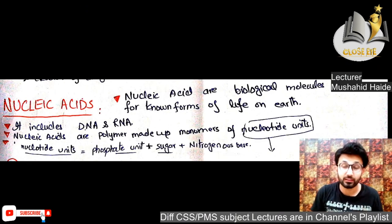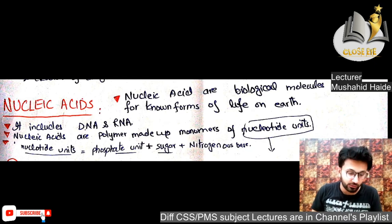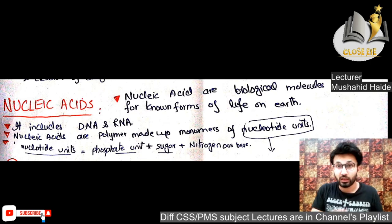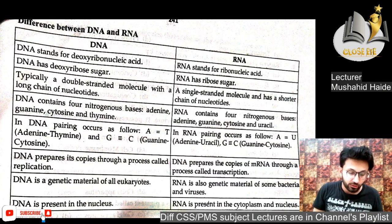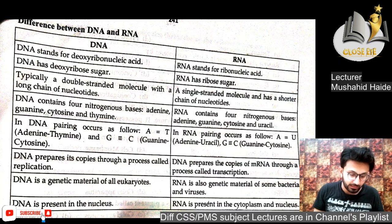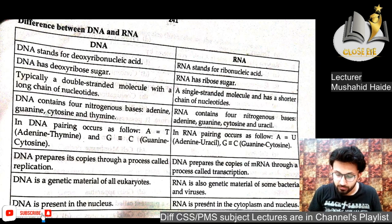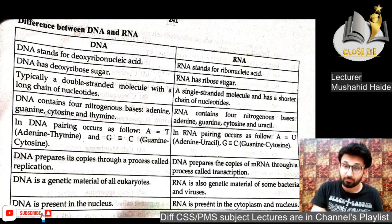The last organelles discussed are DNA and RNA, collectively called nucleic acids. All known life on Earth depends on nucleic acids. Nucleic acids are made of nucleotide units — phosphate, sugar, and nitrogenous base. DNA is Deoxyribonucleic Acid, contains deoxyribose sugar, is double-stranded, and has four bases: Adenine, Guanine, Cytosine, and Thymine. RNA is Ribonucleic Acid, contains ribose sugar, is single-stranded, and has four nitrogenous bases: Adenine, Guanine, Cytosine, and Uracil.